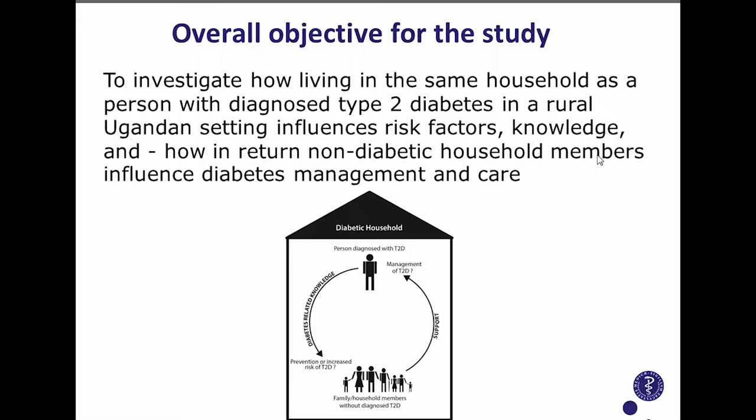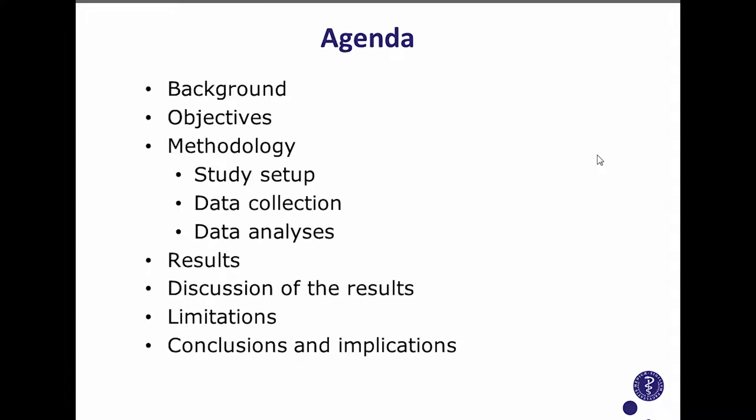The overall objective for this PhD study was to investigate how living in the same household as someone with diabetes influences the other members' risk status for the very same disease, their knowledge about the disease, and how these members support the person with type 2 diabetes in order to manage it.